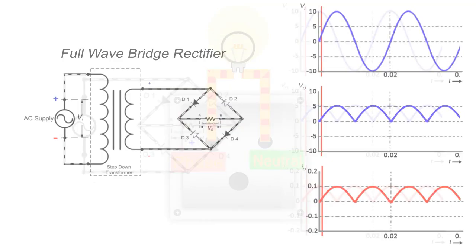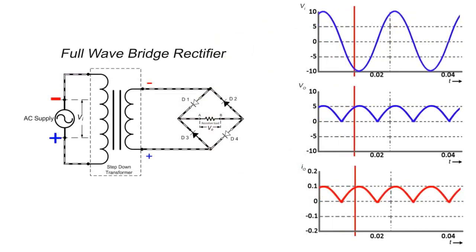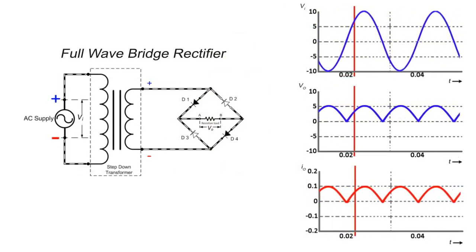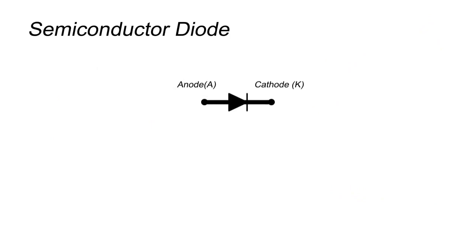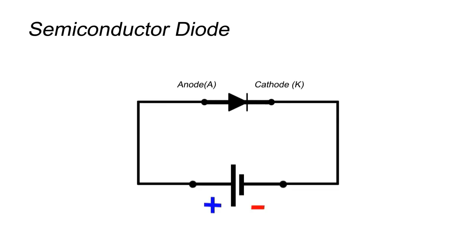We can convert this alternating current to direct current by using four diodes, because a diode only works when it is forward biased. That is, the anode is given higher voltage (positive) and cathode is given lower voltage (negative). Here we can see the anode is getting positive polarity and cathode is getting negative polarity, therefore it conducts.